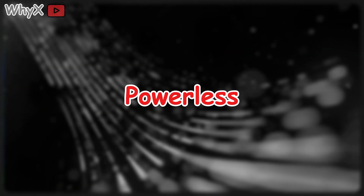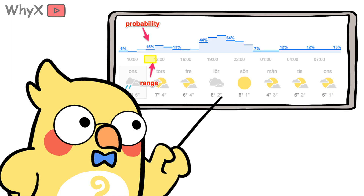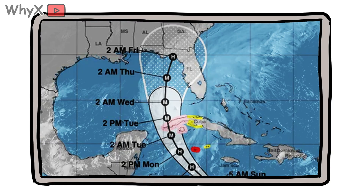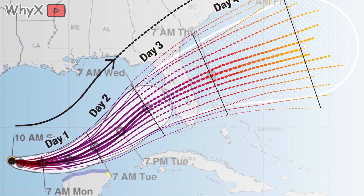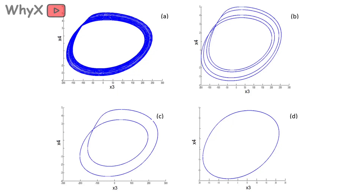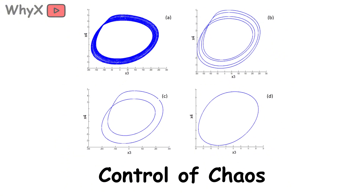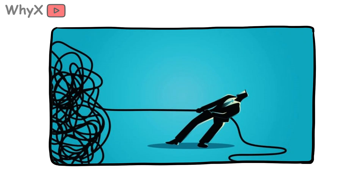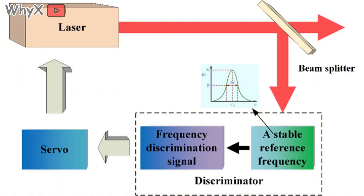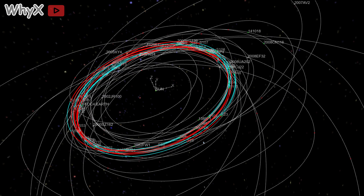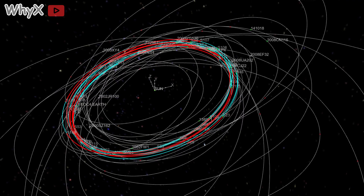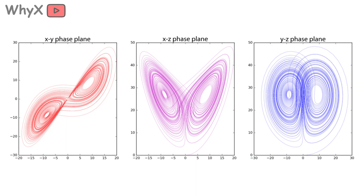But does this mean we're powerless? Not at all. Chaos theory doesn't kill prediction — it reframes it. Instead of pretending we can know exact futures, scientists embrace probabilistic forecasting. Think of hurricane tracks: meteorologists don't draw a single line; they show a cone of possibilities that widens with time, reflecting growing uncertainty. It's an honest way to handle chaos — not by denying it, but by quantifying it. In fact, sensitivity can sometimes be harnessed. Physicists call this control of chaos: by applying tiny nudges at the right moments, you can steer chaotic systems without brute force. This insight has been used to stabilize lasers, improve heart rhythm therapies, and even design spacecraft trajectories. In other words, butterflies aren't just threats — they can be allies if you know when and where to intervene.